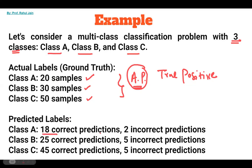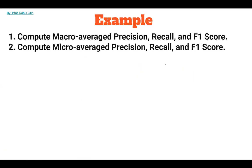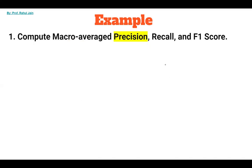For the predicted labels: in class A, 18 are correctly predicted and 2 are incorrectly predicted. In class B, there are 25 correct predictions and 5 incorrect predictions. In class C, 45 correct predictions and 5 incorrect predictions. Now we need to calculate macro average precision, recall, and F1 score, and micro average precision, recall, and F1 score.